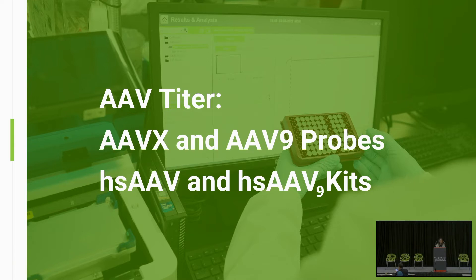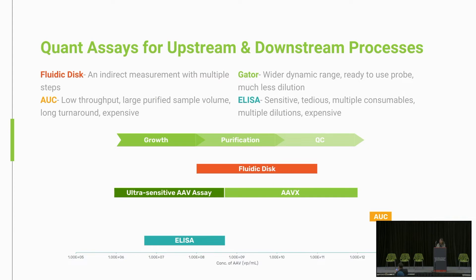Today I'm focusing on the AAV-related applications, which are our latest additions to the menu. The first one is AAV titer determination, and we have a full package for you. Our product covers a dynamic range from upstream all the way to downstream processing. For upstream, you can use this sensor with crude lysate, which is very convenient and saves time. For downstream, you don't need to do tedious dilutions — it's a one-step assay for direct titer determination.